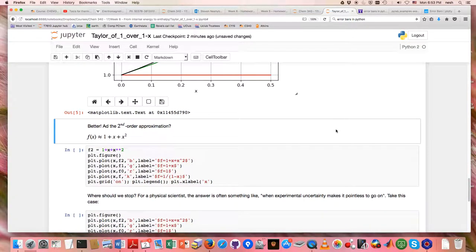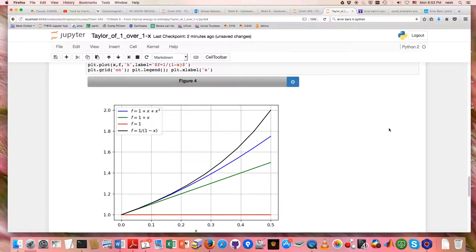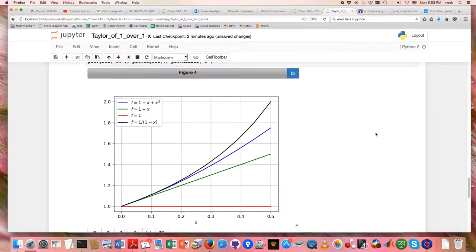What if we add in the second order term? Well, that's blue here. That's 1 plus x plus x squared. It's got some curvature, so it does a little bit better.